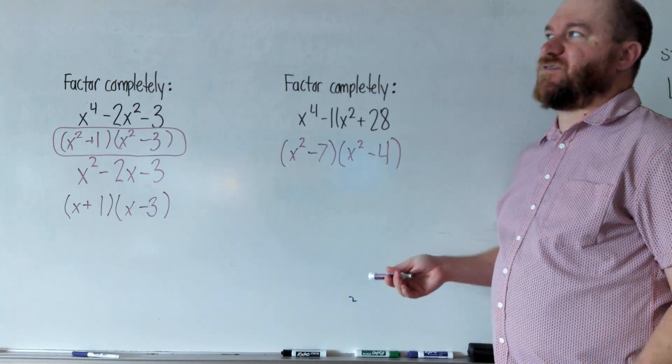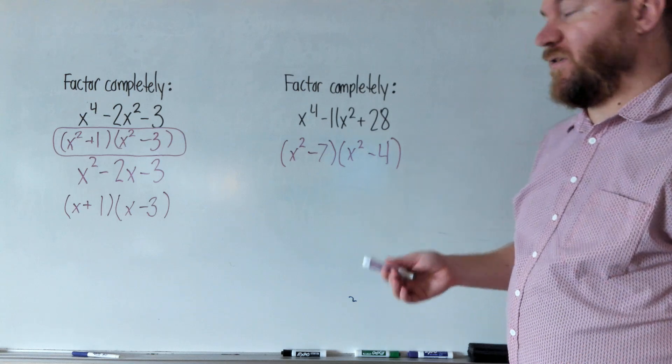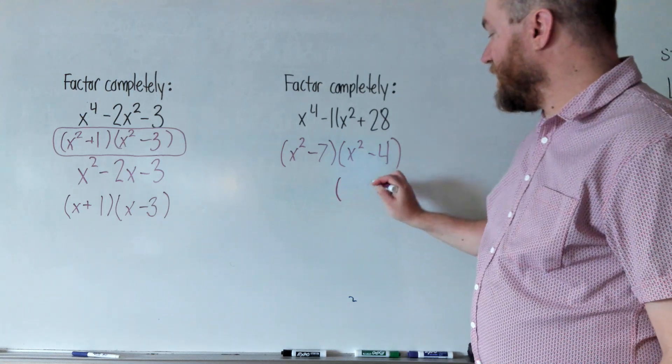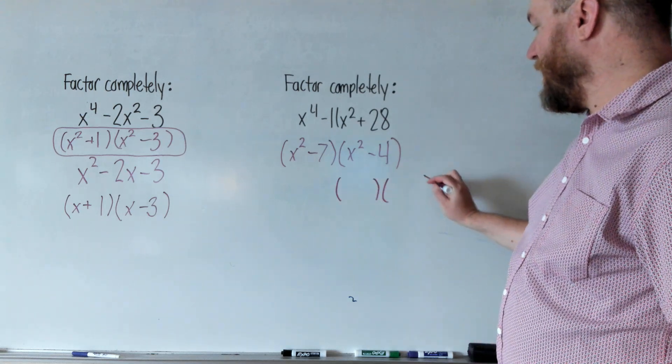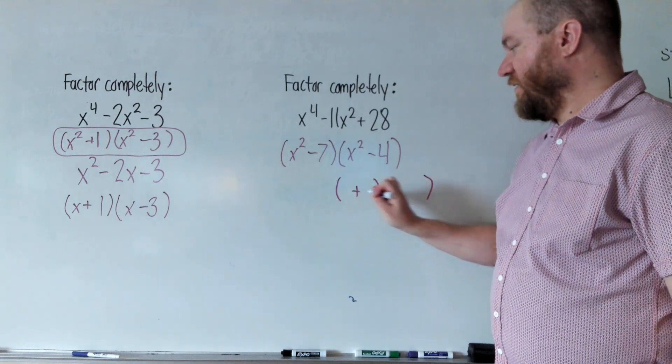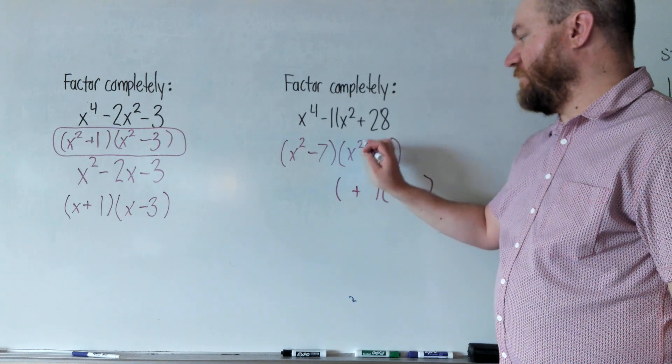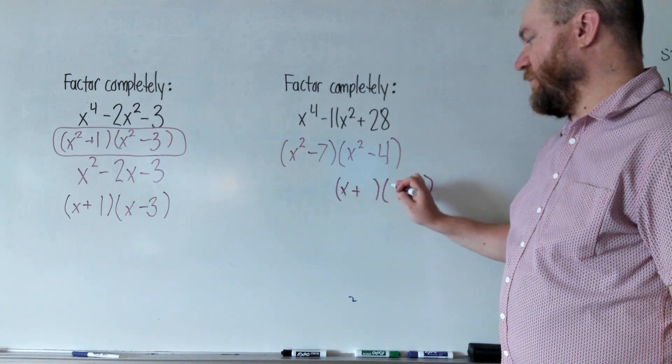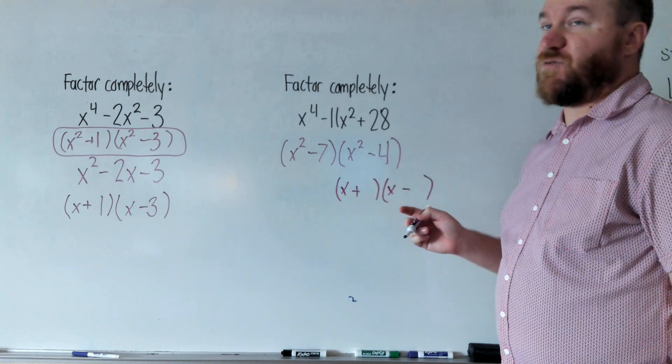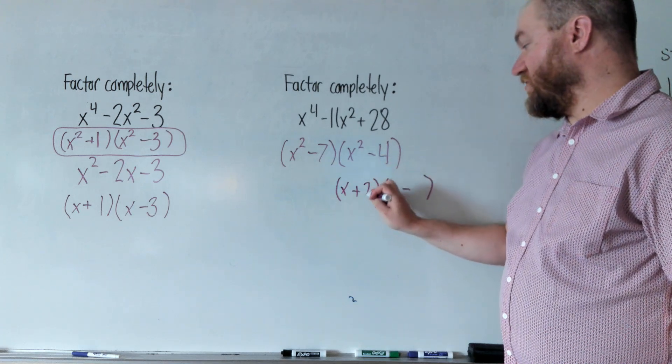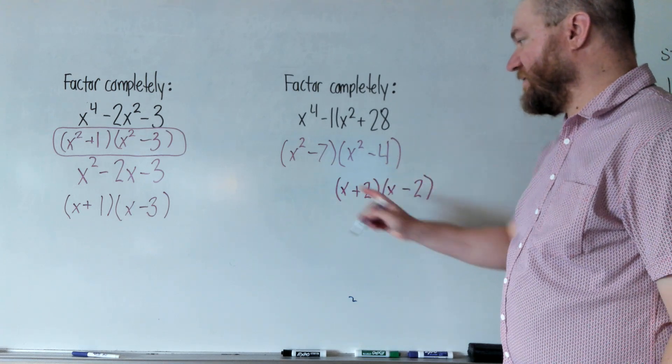x squared is a perfect square, and 4 is a perfect square. So to factor a difference of two squares, you write two parentheses, one with a plus, one with a minus, and then you square root the front, x squared, and you write it in both fronts. Then you square root the 4, which is 2, and you write it in both backs.